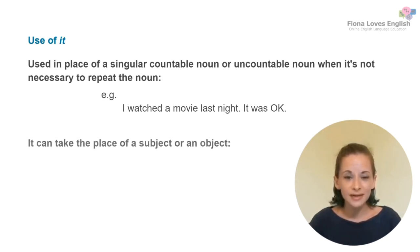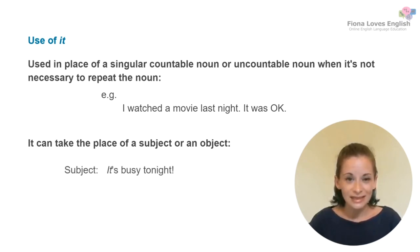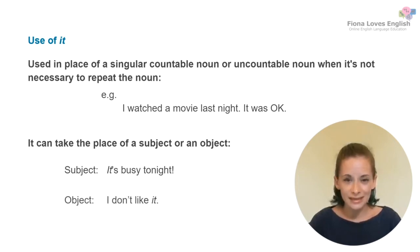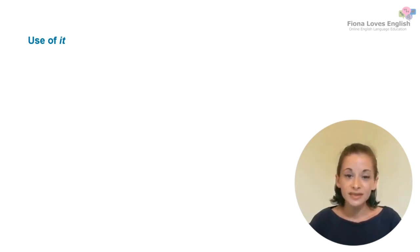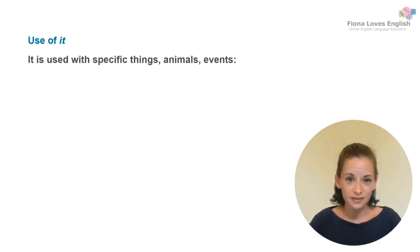We can use the impersonal pronoun in the place of the subject or the object. Here's an example of it being used in place of the subject: 'It's busy tonight.' In this sentence, 'it' is the subject and it's referring to the place that the speaker is in. Here's another example: 'I don't like it.' In this sentence, the subject is 'I,' the verb is 'don't like,' and 'it,' the impersonal pronoun, is used in place of the object. So we use 'it' with specific things, animals, or events.